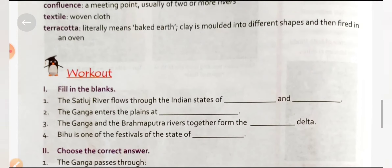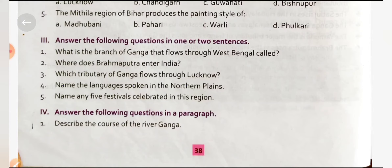Answer in one or two sentences: What is the branch of Ganga that flows through West Bengal called? When the Ganga enters West Bengal, it splits into two main branches — the Hooghly in West Bengal and the Padma that flows through Bangladesh. In Bangladesh, the Ganga is known as Padma.